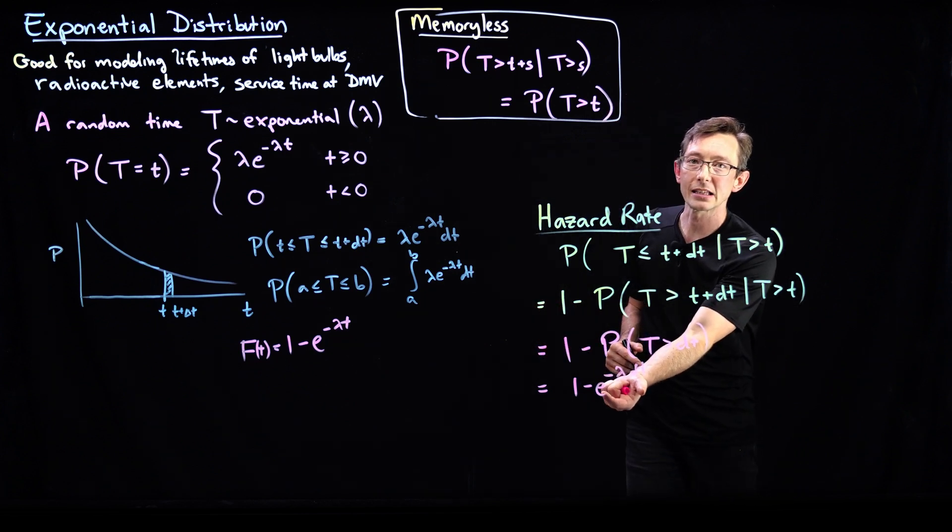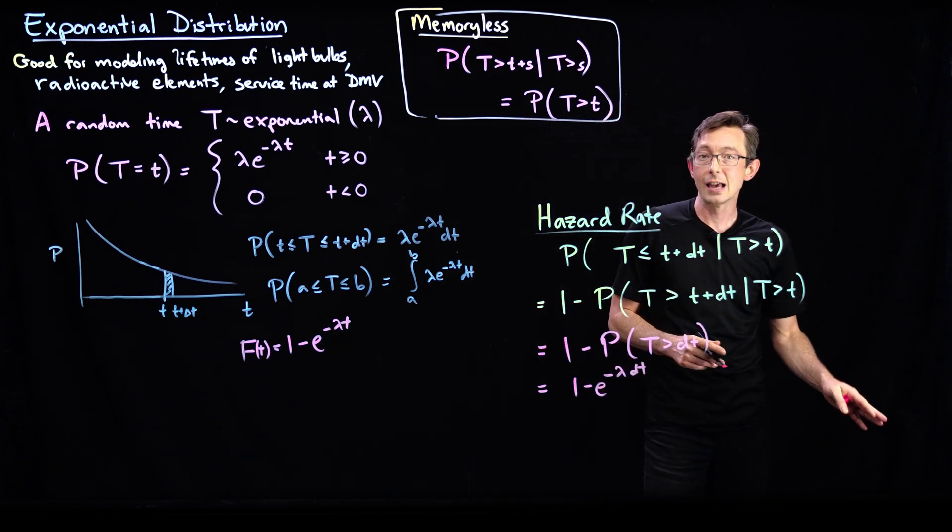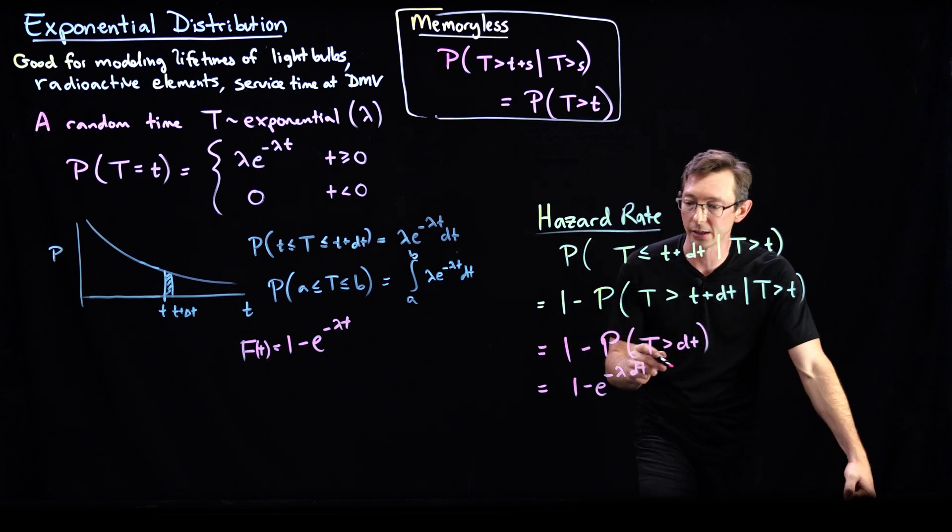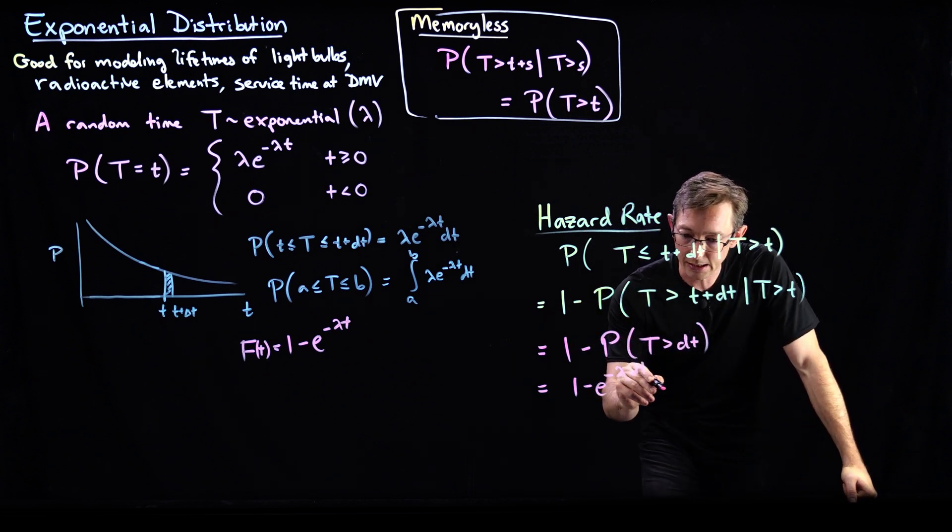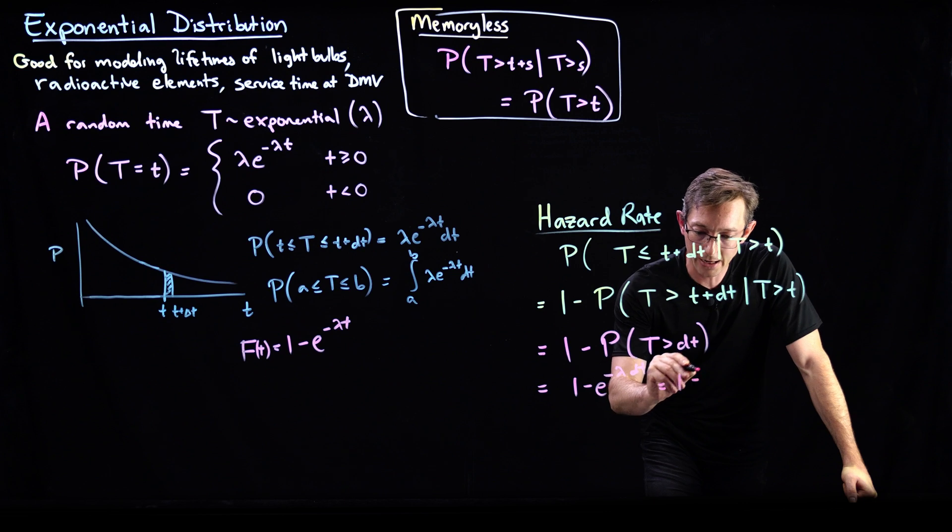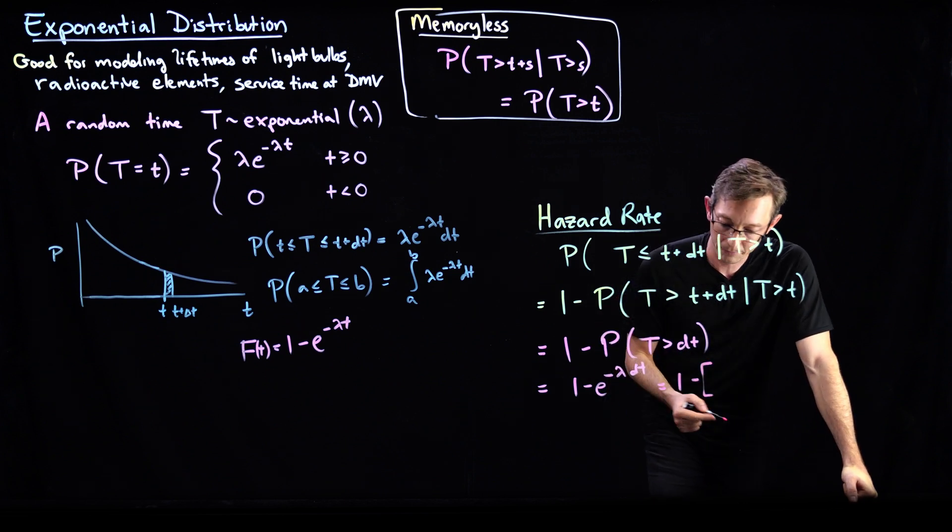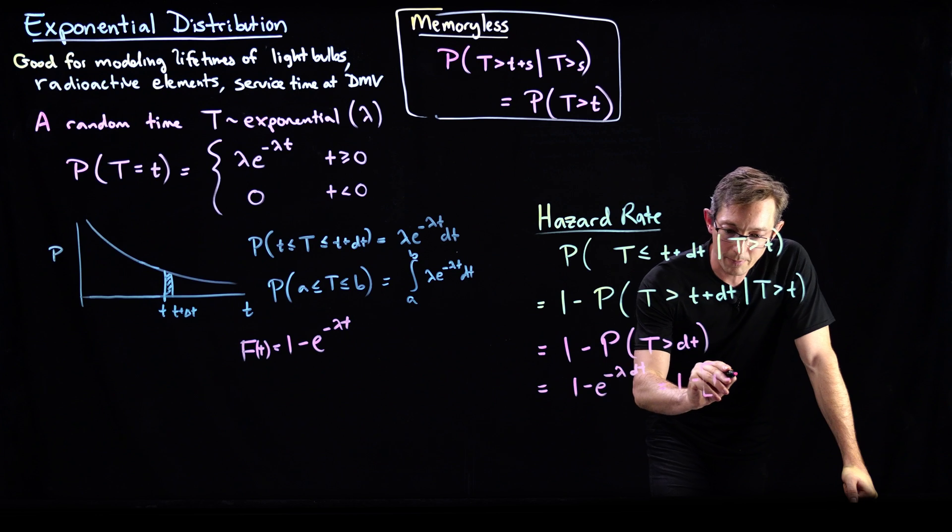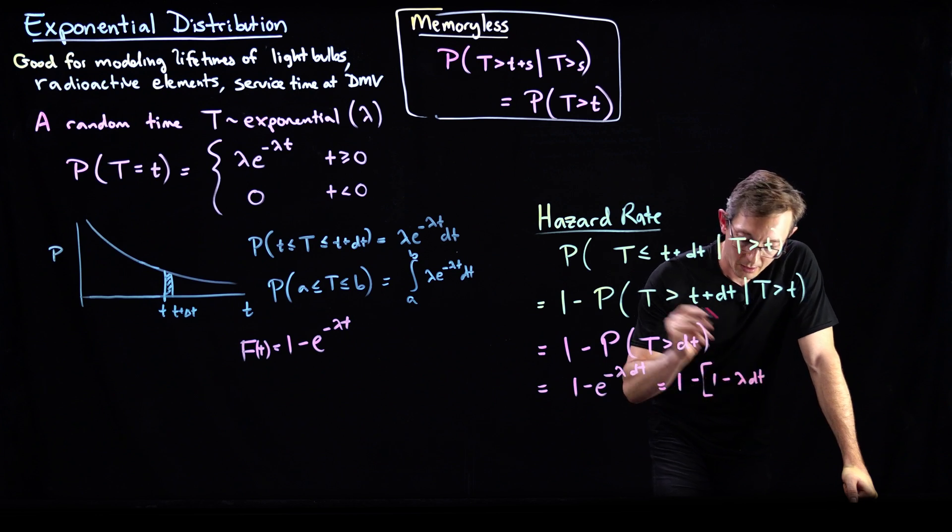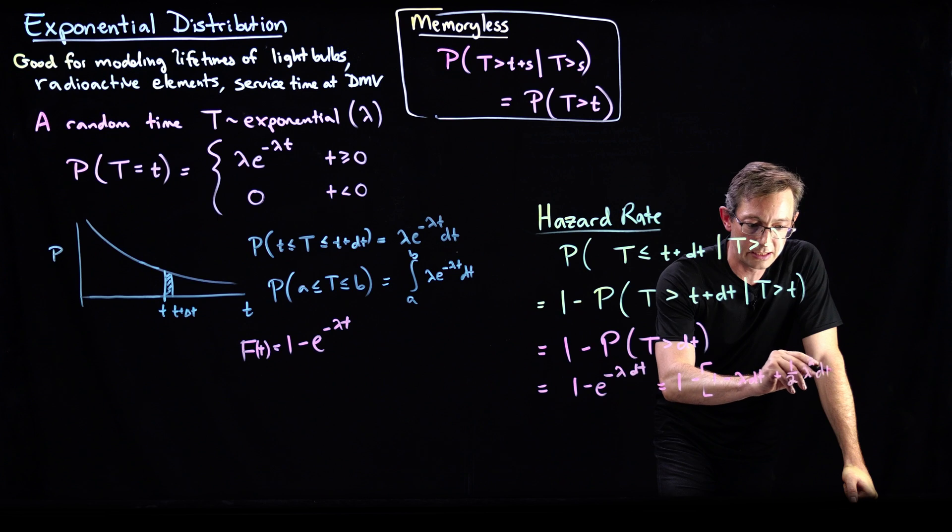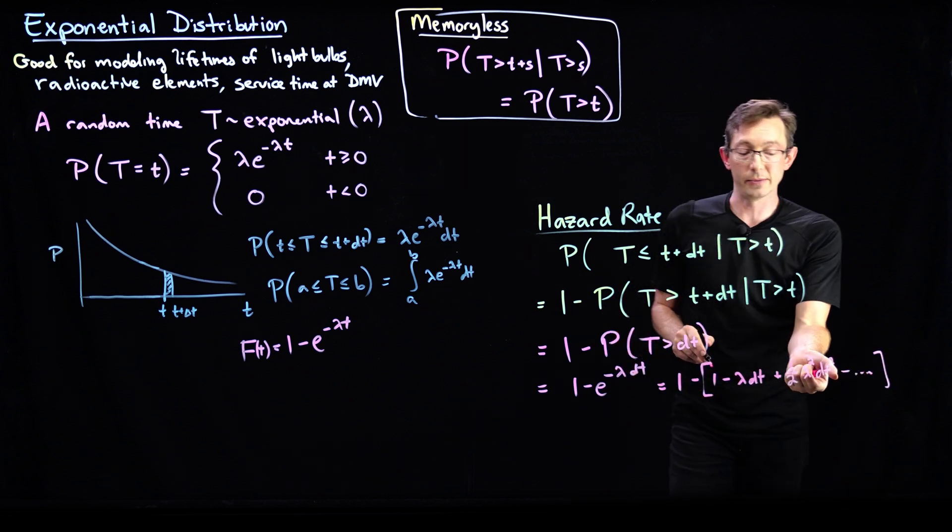I can expand out this exponential in a Taylor series, and I can make a small dt approximation and get a really interesting result. So this is 1 minus the Taylor series approximation of e to the minus lambda t, which is 1 minus lambda dt plus 1 half lambda squared dt squared minus dot dot dot higher order terms in lambda and dt.